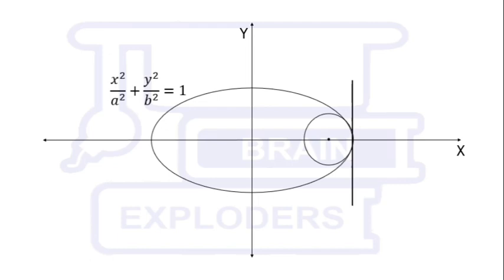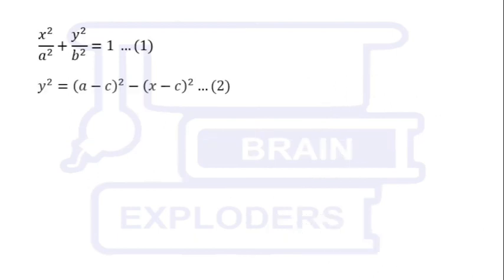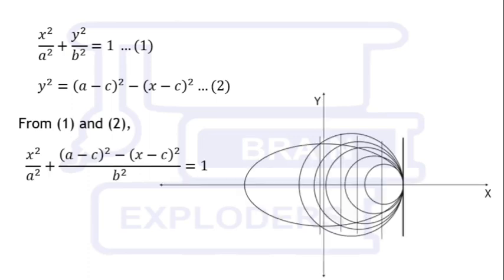Suppose the equation of the ellipse is x²/a² + y²/b² = 1. The point where the ellipse intersects the x-axis is (a, 0), and let the center of the circle be (c, 0). So the radius of the circle is r = a − c, and the equation of the circle is (x − c)² + y² = (a − c)². Therefore y² = (a − c)² − (x − c)². Substituting y² into the ellipse equation gives a quadratic equation.